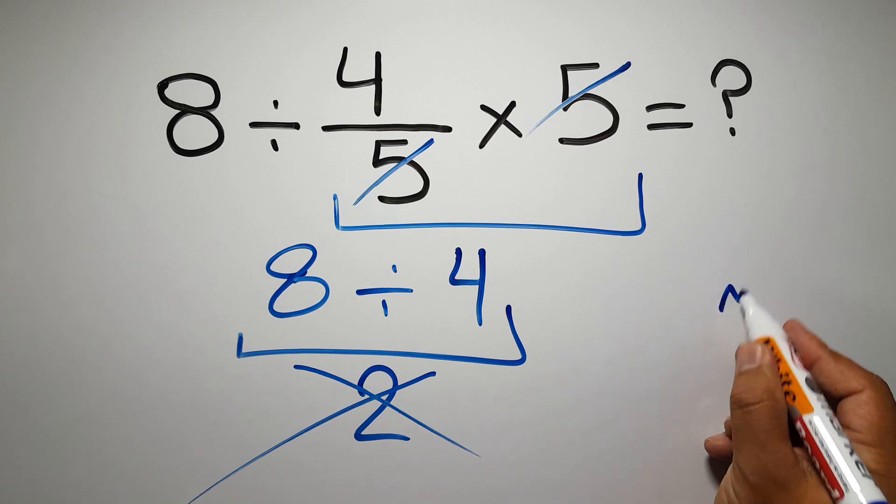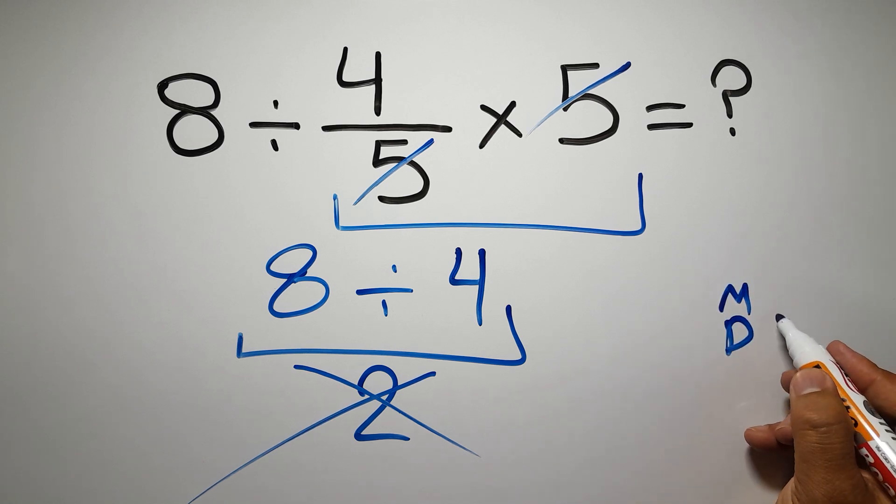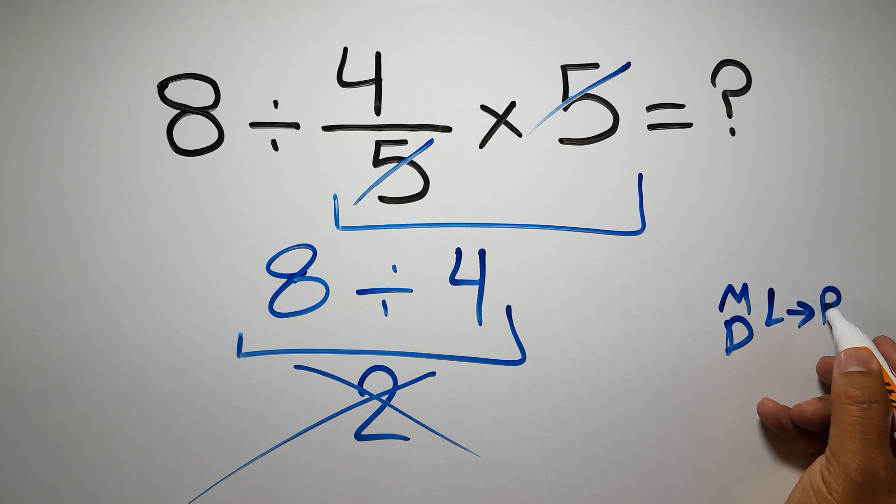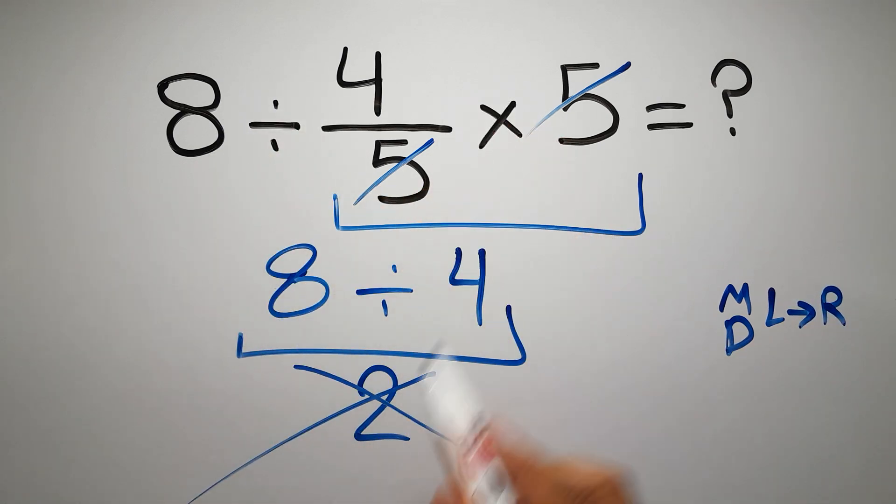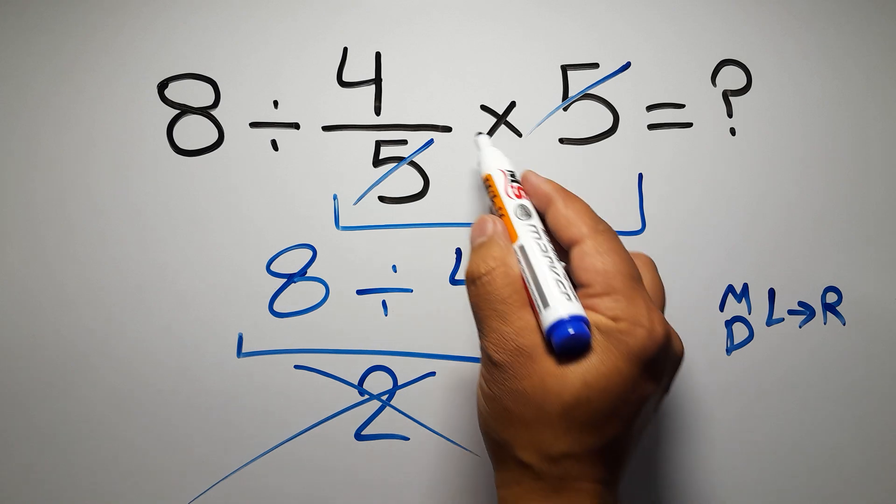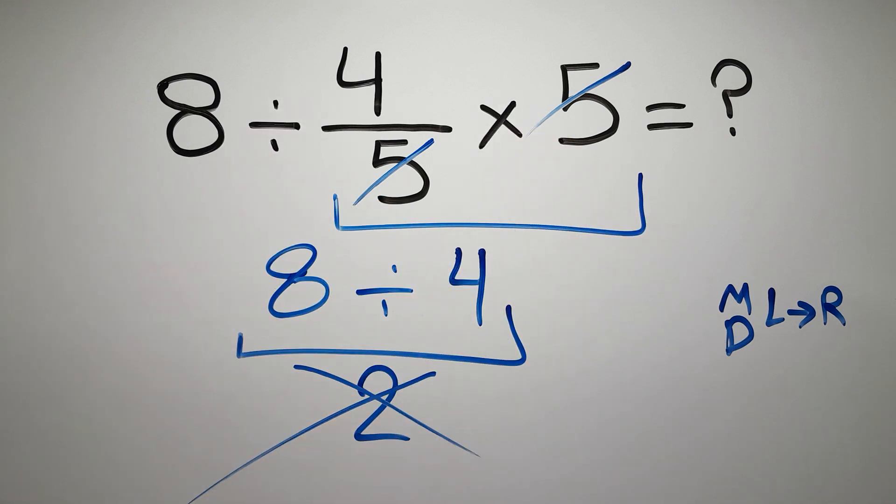the order of operations, multiplication and division have equal priority and we have to work from left to right. So here first we have to do this division, then this multiplication. If we do this multiplication before this division, it is wrong.